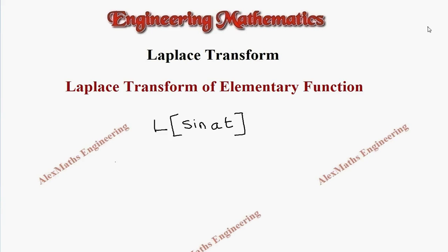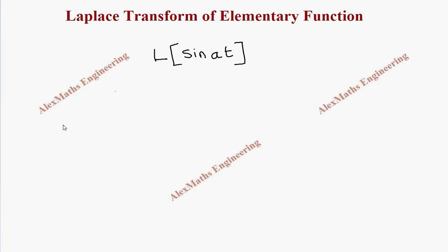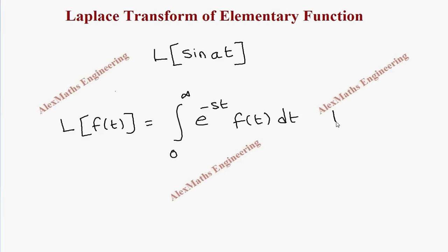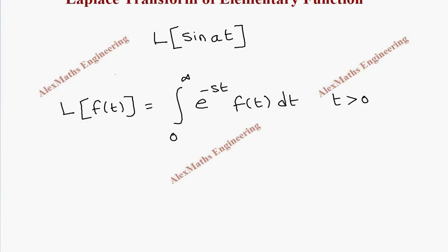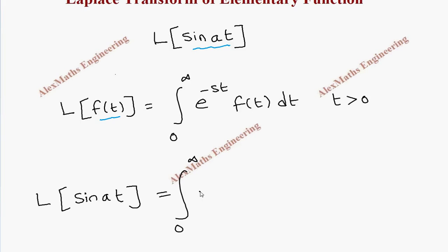Hi students, this is Alex. In this video we are going to find the Laplace transform of the elementary function sine(at), that is L{sin(at)}. As per the formula, L{f(t)} is given as the integral from 0 to infinity of e^(-st) * f(t) dt, where t is a positive value. In place of f(t) we substitute sin(at), so L{sin(at)} becomes the integral from 0 to infinity of e^(-st) * sin(at) dt.